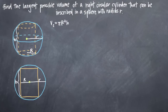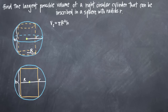In this particular problem, we've been asked to find the largest possible volume of a right circular cylinder that can be inscribed in a sphere with radius r. As with any optimization problem, the first thing we want to do is draw a picture of what we know. We've been told that we're inscribing a cylinder into a sphere — fitting a cylinder inside of a sphere. I've drawn the sphere here in blue and the cylinder in orange.